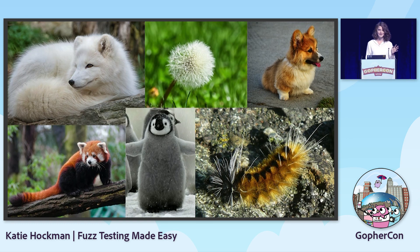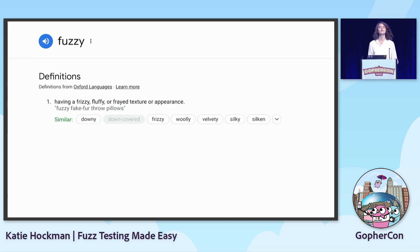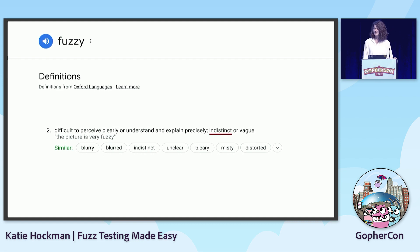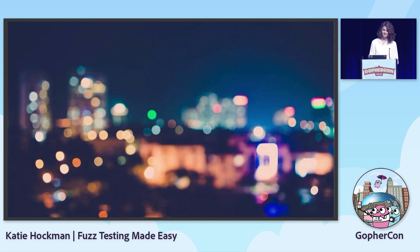Unfortunately, it's not quite the kind of fuzzy I'm looking for. What about definition number two? Something that's difficult to perceive clearly or understand and explain precisely — indistinct or vague. I think the word indistinct is the one we should care about here. If your testing is indistinct, it isn't sharply defined. And that's the main difference between other types of testing and fuzz testing.